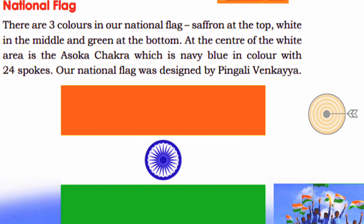Our National Flag has three colors: saffron at the top, white in the middle, and green at the bottom. At the center of the white area is the Ashoka Chakra, which is navy blue in color with 24 spokes. Our national flag was designed by Pingala Venkayya.